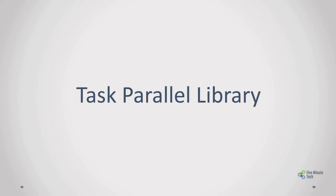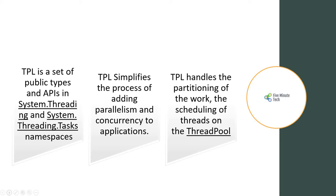Hello everyone, welcome to the 5 Minute Tech channel. Today we will be talking about TPL, which is Task Parallel Library. Task Parallel Library is a set of public types and APIs in the System.Threading and System.Threading.Tasks namespaces provided by Microsoft. TPL is basically used for simplifying the process of adding parallelism and concurrency to our applications.